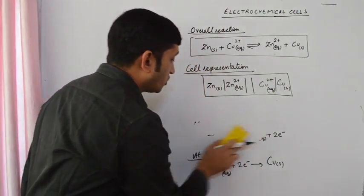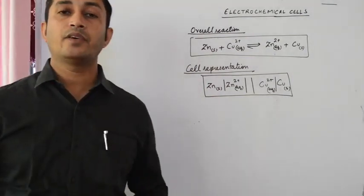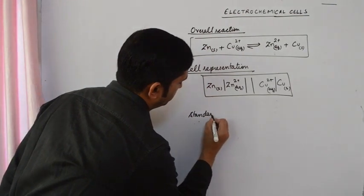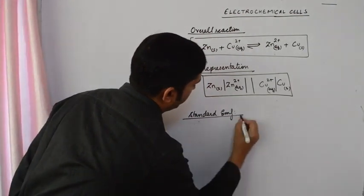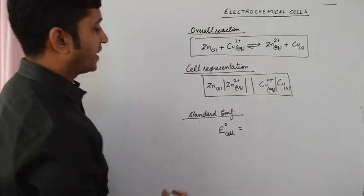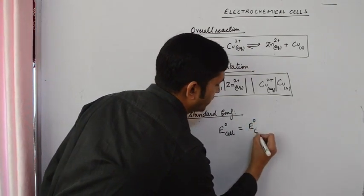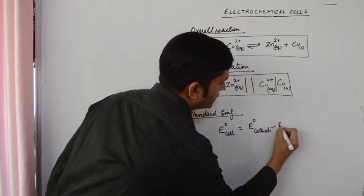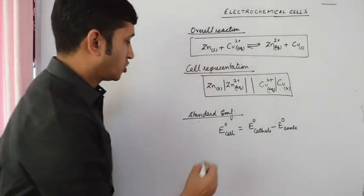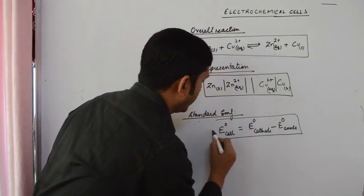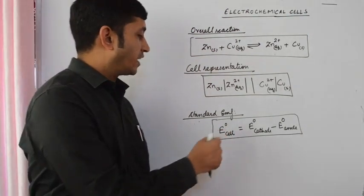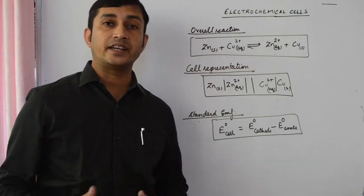We can also calculate the value of standard EMF or standard cell potential. Standard EMF of any cell can be calculated by taking the difference of standard electrode potential of cathode minus standard electrode potential of anode. Using this formula we can calculate standard cell potential, but before that we need to know how to determine the standard electrode potential.